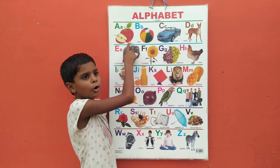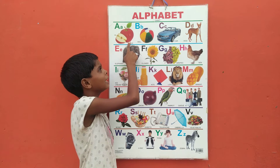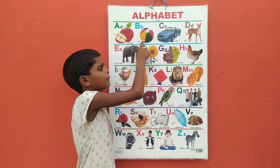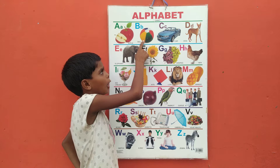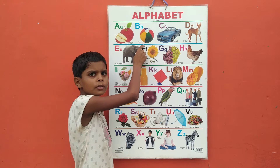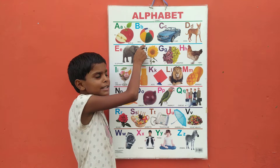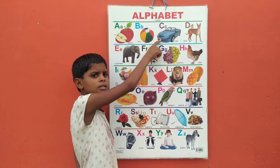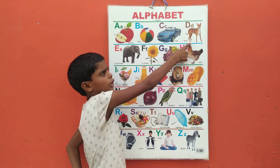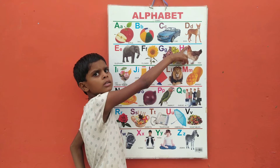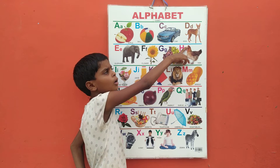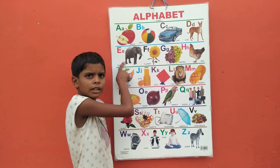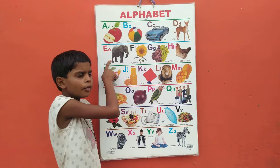A for apple, B for ball, C for cat, D for dog, E for elephant.